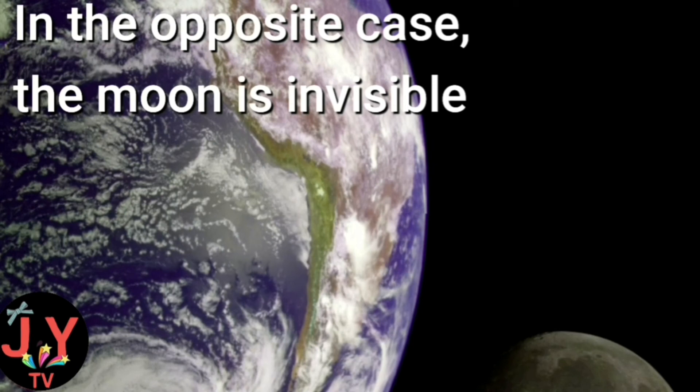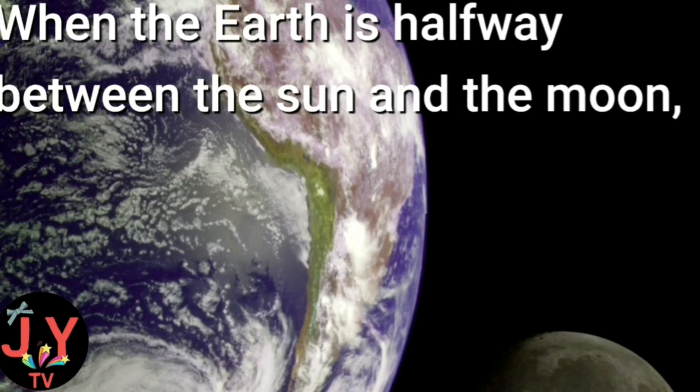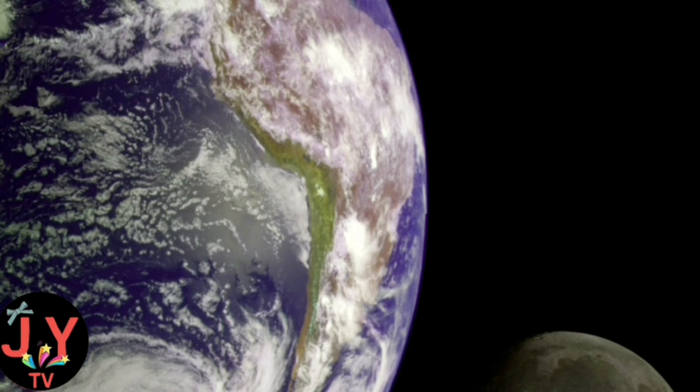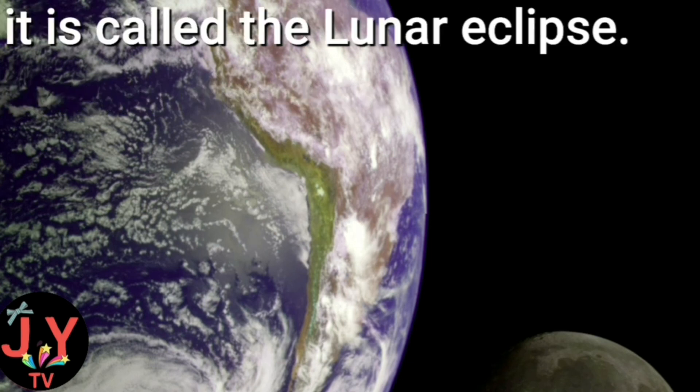In the opposite case, the moon is invisible. When the earth is halfway between the sun and the moon, this is called the lunar eclipse.